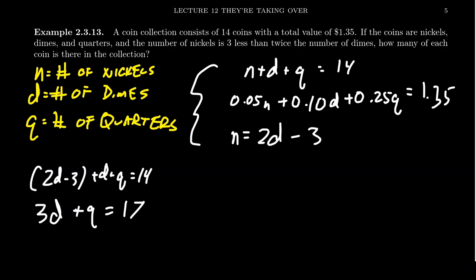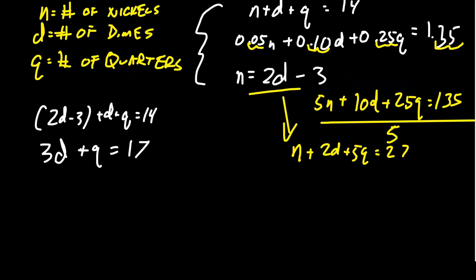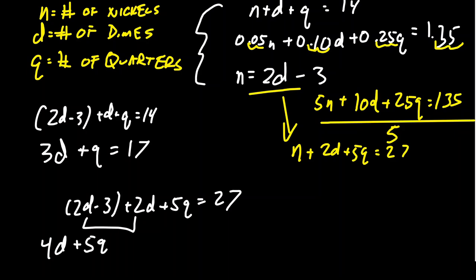For the next equation, before I do the substitution, I'm going to make some modifications. Let's move the decimals over by 2, so we get 5n plus 10d plus 25q equals 135. Everything is divisible by 5, so dividing gives us n plus 2d plus 5q equals 27. Substituting n equals 2d minus 3, we get 4d plus 5q equals 30.